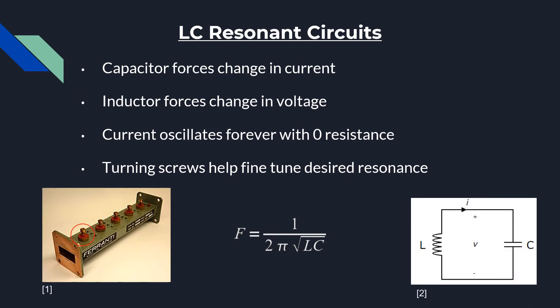Almost all waveguide filters use something called LC resonant circuits. An LC resonant circuit is basically a circuit in which a capacitor and an inductor are placed together. The capacitor tries to force a change in current, while the inductor tries to force a change in voltage.